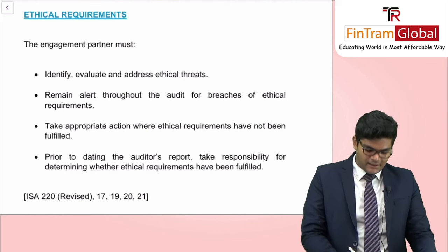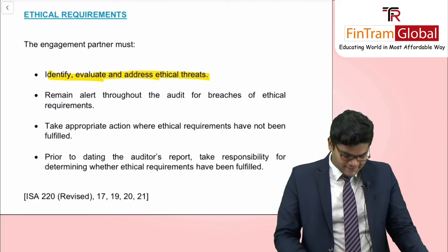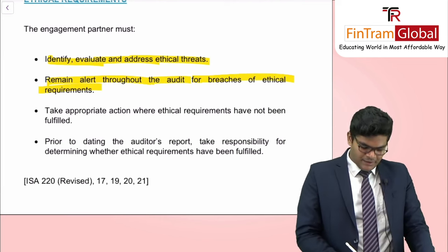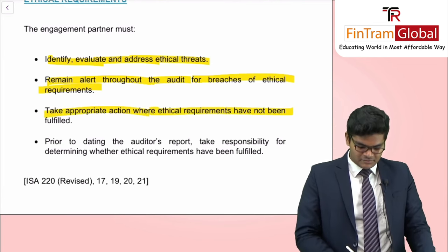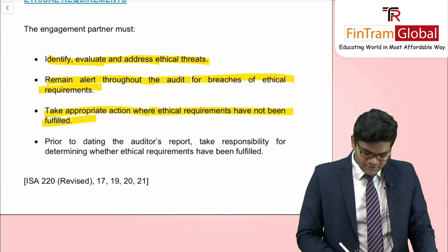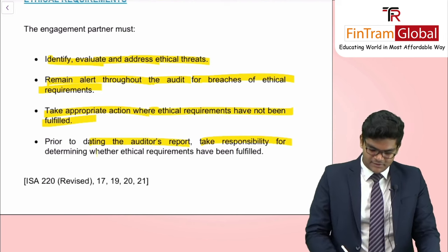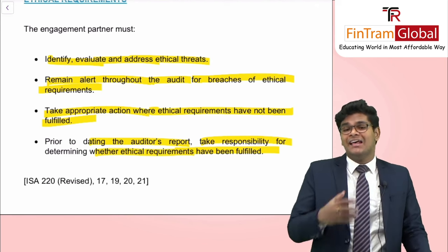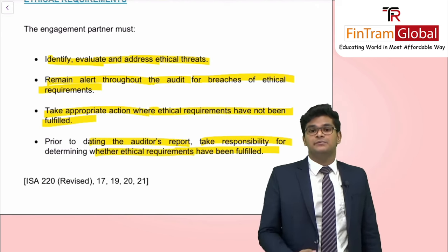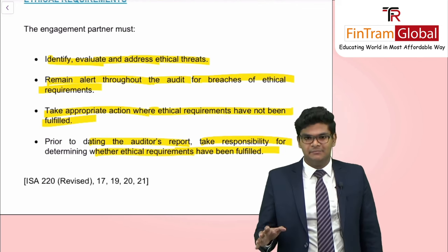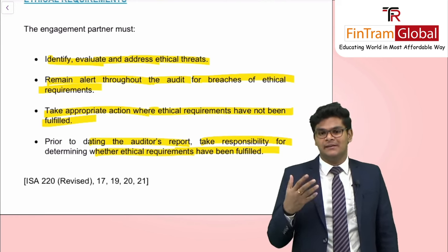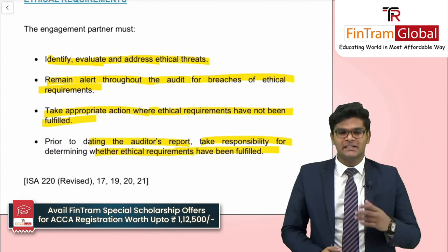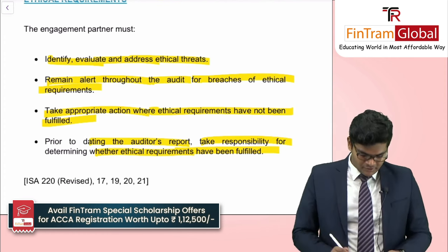Moving on to ethical requirements. The engagement partner must identify, evaluate, and address ethical threats. They must remain alert throughout the audit for any breaches of ethical requirements, take appropriate action where ethical requirements have not been fulfilled, and prior to dating the auditor's report, take responsibility for determining whether ethical requirements have been fulfilled. Both before initiating the audit and at the conclusion, the engagement partner must ensure everyone within the audit team, including himself, is complying with all ethical principles.